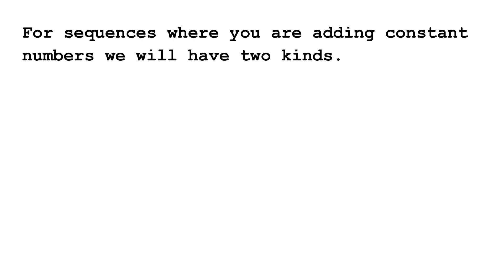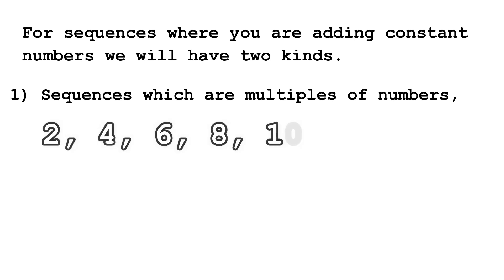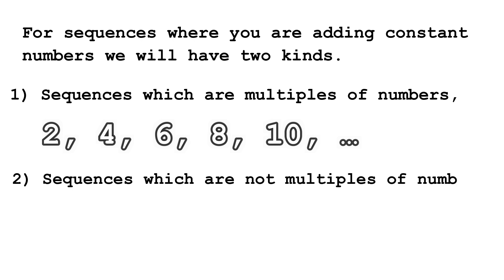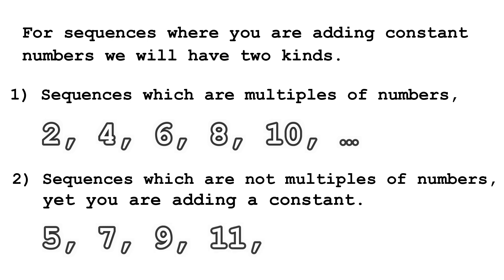There are sequences wherein you are adding constant numbers. The first group of sequences are multiples of numbers — you may recall these from your multiplication table. An example is 2, 4, 6, 8, 10. The next kind of sequence is where you are still adding a constant number but they are not multiples of any number. An example is 5, 7, 9, 11, and so on — here you are adding 2 but it is not a multiple of any number.